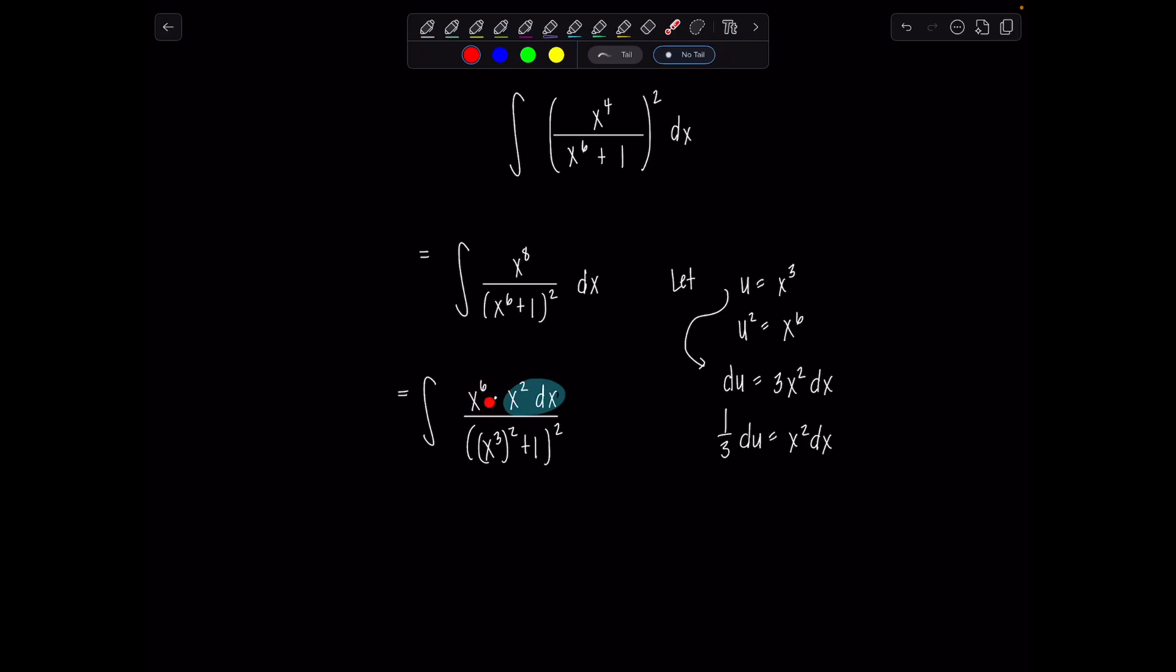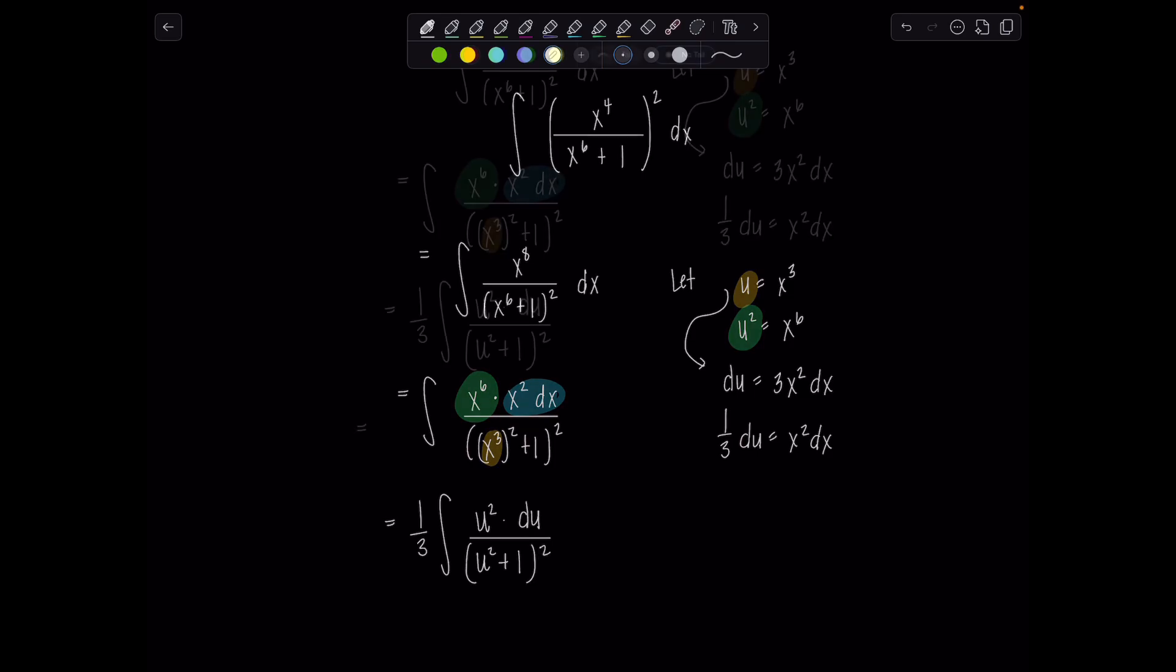That's right there. That's going to be one third du. And then who's this? This is u squared plus one. And then all of that squared. This extra x to the sixth, no problem. Who's this? That's just u squared. Okay, so we're good to go. So we've got one third, that x to the sixth is u squared. x squared dx, that's part of the one third du. And then in the denominator now, x cubed, that's just u. So we've got u squared plus one quantity squared. How are we doing?